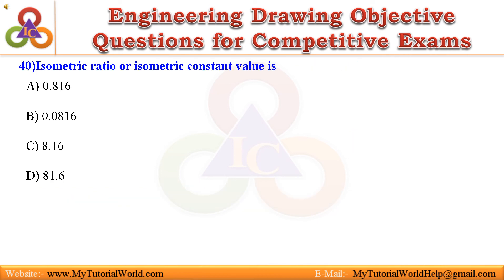Question 40. Isometric ratio or isometric constant value is: A. 0.816, B. 0.0816, C. 8.16, D. 81.6. Answer is: 0.816.